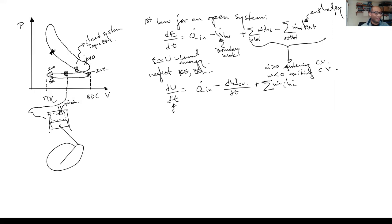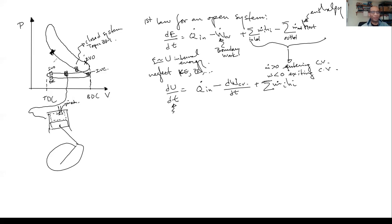Now we have to be careful: in the closed system analysis, big U equaled mass times specific internal energy u, and we could pull mass out because it was constant. Here, mass is not constant — it changes whenever the valves open — so we can't freely move mass inside or outside the derivative. For an ideal gas with constant cp and cv, delta U equals the change of m·cv·T.